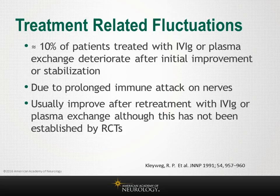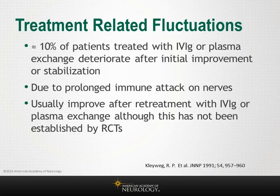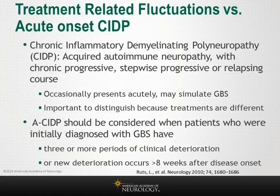Treatment-related fluctuations occur in approximately 10 percent of patients treated with IVIG or plasma exchange, who deteriorate at least one grade after initial improvement or stabilization. This is thought to be due to a prolonged immune attack on the nerve. These patients usually improve after retreatment with the same modality — a few more exchanges if they received plasma exchange, or retreatment with IVIG at 2 grams per kilogram for another five days.